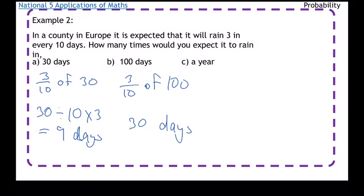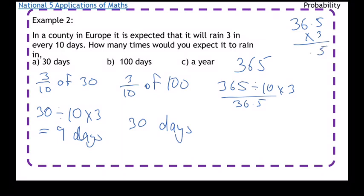Last one's a bit trickier because it's a year. So remember years are 365 days. So we're going to take 365, we're going to divide it by 10 and times it by 3. So 365 divided by 10 is 36.5, which I'm then going to times by 3. So 36.5 times by 3: 5 times 3 is 15, 6 times 3 is 18 plus 1 is 19, 3 times 3 is 9 plus 1 is 10. So 109.5, so I'm just going to round up to 110 days.